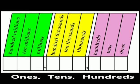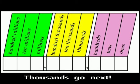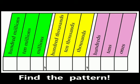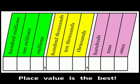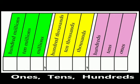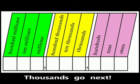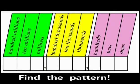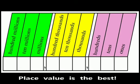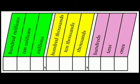Like this: ones, tens, hundreds, thousands — go next, find the pattern. Place value is the best. Ones, tens, hundreds, thousands — go next, find the pattern. Place value is the best.